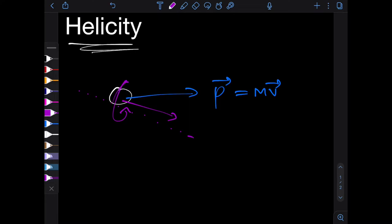So if your fingers curl this way, your thumb points in the direction of the vector, and we call that vector s.